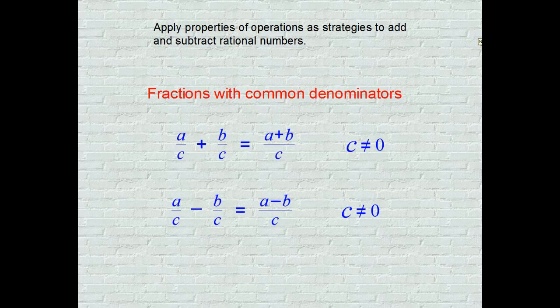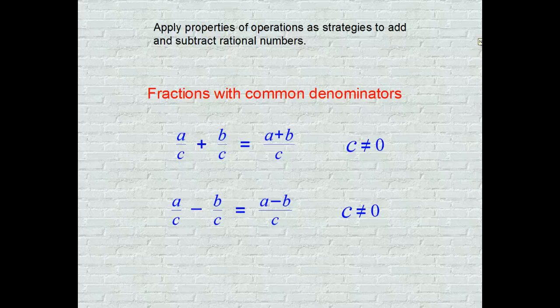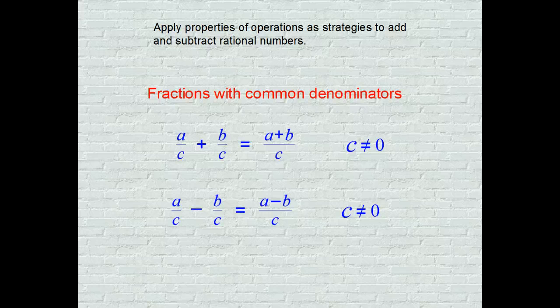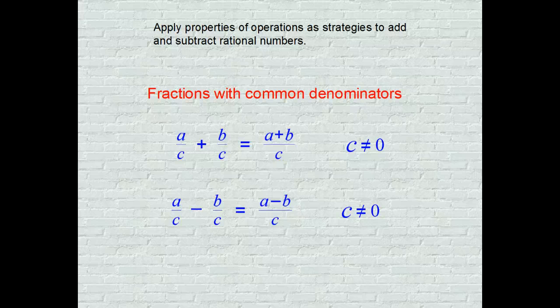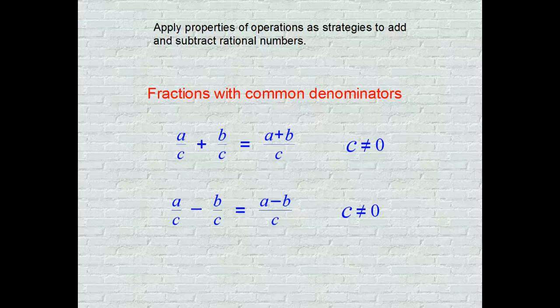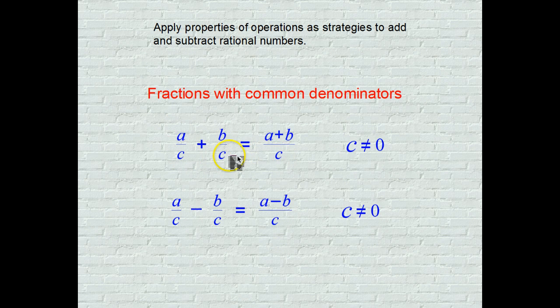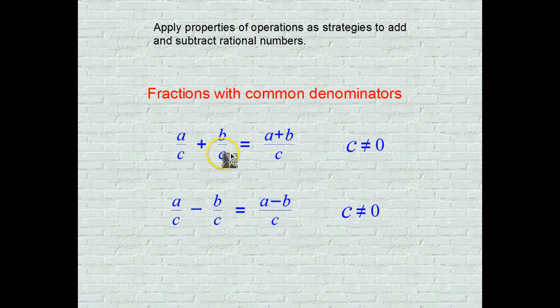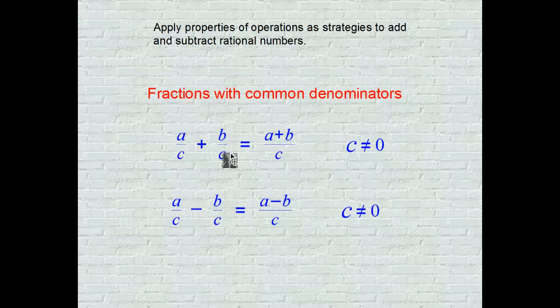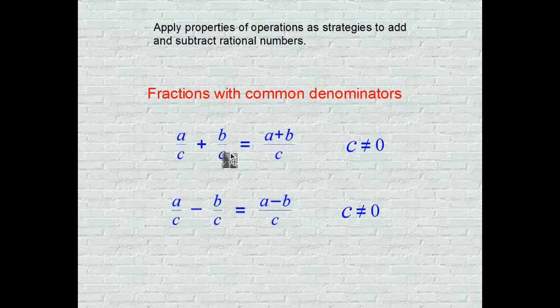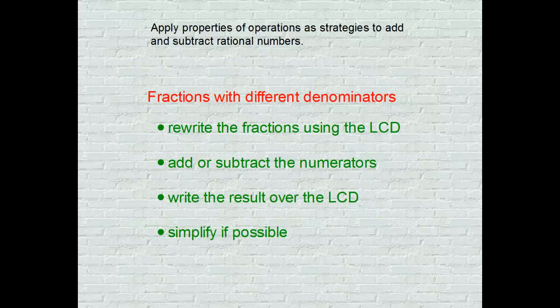Some terms to know: pause the video please and define these words in your journal. I have a couple of rule pages for you to copy down also. This is the rule for adding or subtracting fractions that have common denominators. Notice the denominator is common, so we have a C and a C. By rule, when your denominators are the same, you add your numerators, or in the bottom case, subtract your numerators. Special note: don't let your denominator be zero. We call that an undefined fraction.